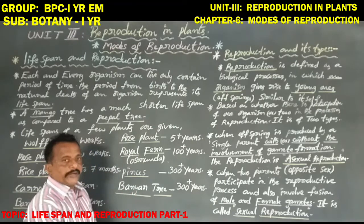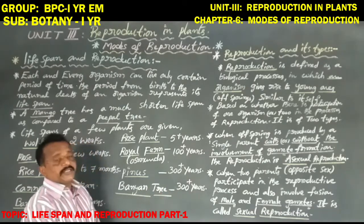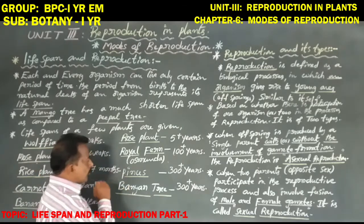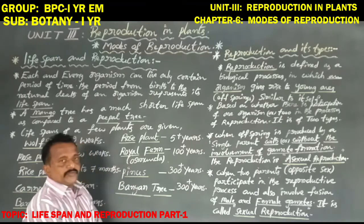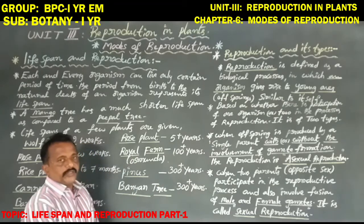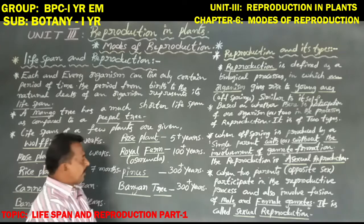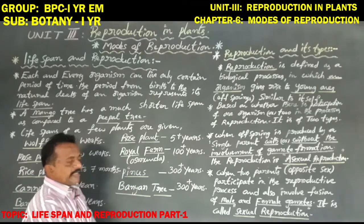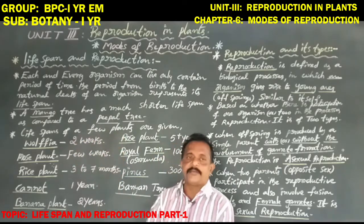The banyan tree and peepal tree also have a life span of 300 plus years. These two are very important at the NEET and EAMCET level. The fir/pine plant is a gymnosperm, and the banyan tree is an angiosperm, but both plants have a life span of 300 plus years. Do not confuse them: fir/pine is a gymnosperm plant, banyan tree is an angiospermic plant. These are the life spans of a few plants.